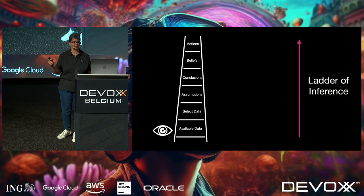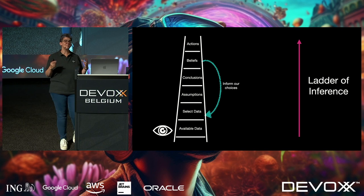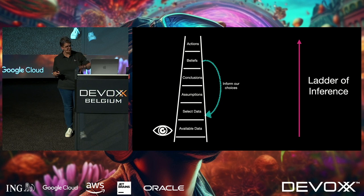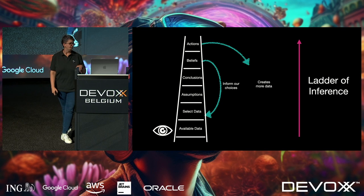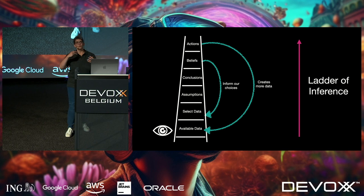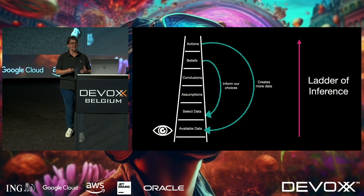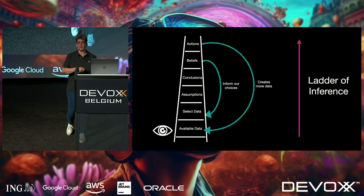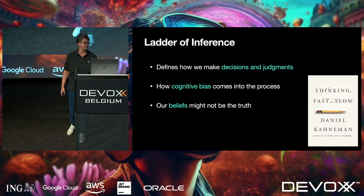There are two reinforcing loops. The first: from beliefs to data — we unconsciously select data that backs up our beliefs. The second: from actions to available data — we take actions that produce more data, then unconsciously select from that data to back up our beliefs. It's ridiculously cool and infuriating at the same time. If this interests you, I highly recommend 'Thinking Fast and Slow.' The ladder of inference defines how we make decisions, and sometimes it's worth asking: did I go up the ladder too fast?